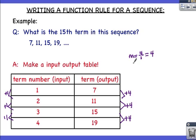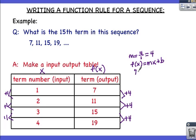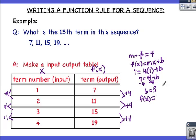Now I can write my linear equation: f of x equals mx plus b, where m is our slope and b is our y-intercept. I can pick any ordered pair—let's use the first one. f of x is 7, m is 4, x is 1, so 7 equals 4 times 1 plus b. That gives us 7 equals 4 plus b; subtract 4, and b equals 3. So my rule for this input-output table is f of x equals 4x plus 3.